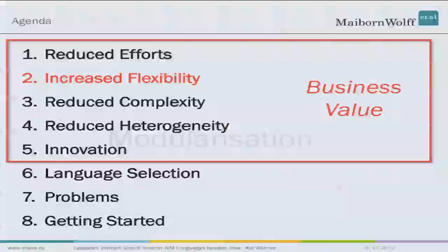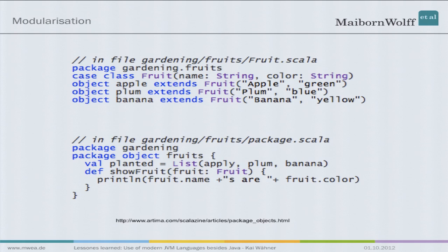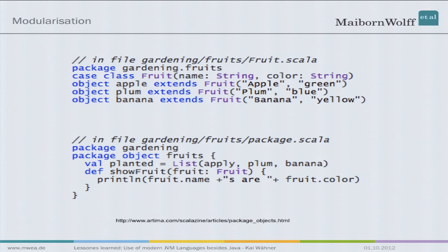The second business value of new modern JVM languages is increased flexibility. One example is modularization — I don't mean Jigsaw here. In Scala, and many other modern languages, you can structure your code much more flexibly. For example, you can put several classes into one file or also several packages and structure it as you want. We've used this flexibility a lot when working with new APIs — when you want to learn new APIs, it's much easier to have everything in one class just for testing and writing unit tests. Then if you go to production code, you can of course still structure it as you do in Java.